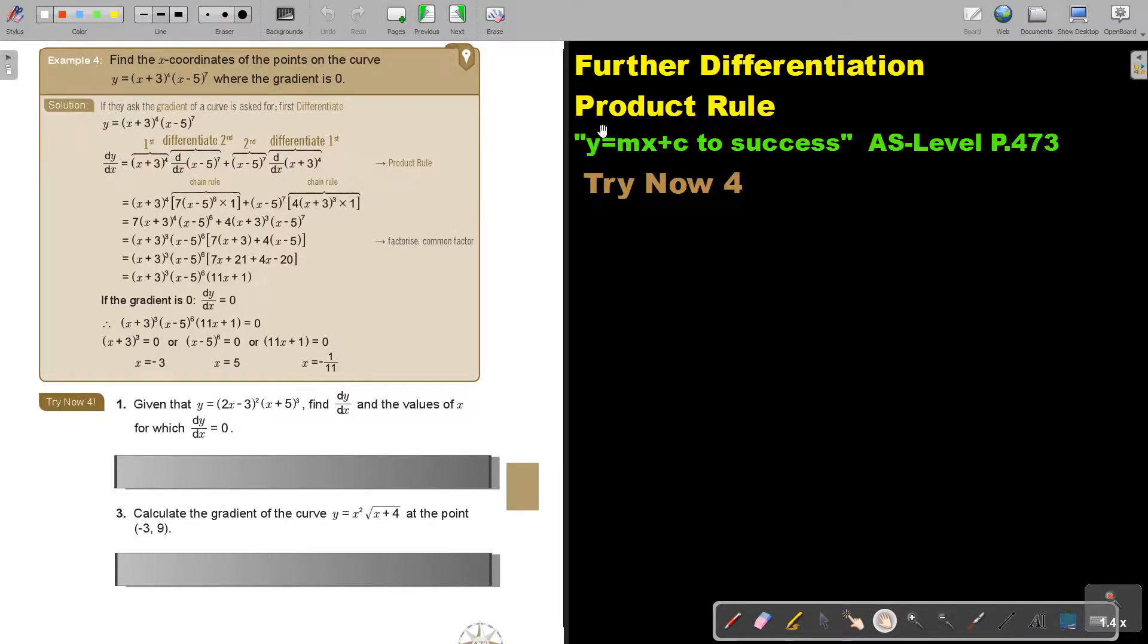In this video we are going to continue with the product rule. You will find this on page 473 in the Namibia AS level mathematics textbook Y equals MX plus C to success. Let's look at an example. Find the X coordinates of the points on the curve, this is the function, where the gradient is 0.